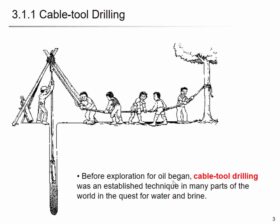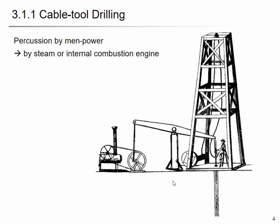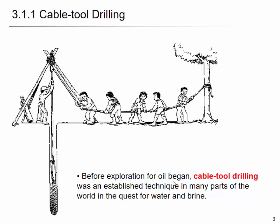Cable tool drilling — I think we talked about it a little bit in chapter 1. People found ground water and developed cable tool drilling to find and extract it. Before the exploration for oil began, cable tool drilling was established in many parts of the world in the quest for water and brine — brine meaning saline water with salt inside. Originally they drilled by manpower, dropping a heavy weight to chip the rock, then stubbing out the chipped rocks to go deeper.